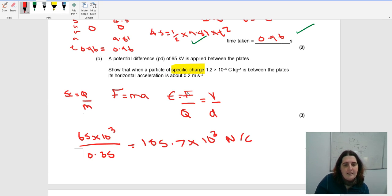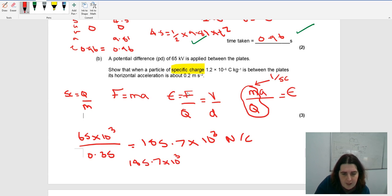This is why I put the specific charge. I know my force is going to be MA because it's accelerating in the x-axis. I've got MA over Q equals my field strength. This here is my charge and my mass. This is 1 over the specific charge. So 185.7 times 10 to the 3 equals 1 over specific charge, which is 1.2 times 10 to the minus 6 times by my acceleration.